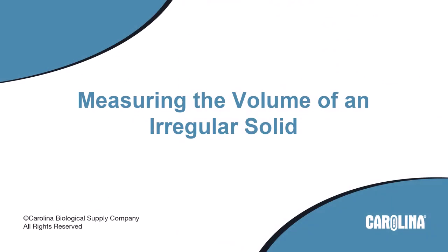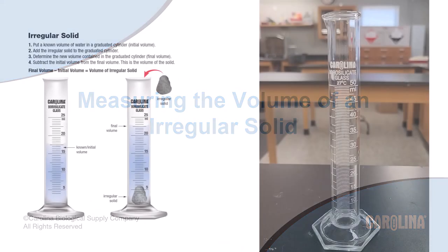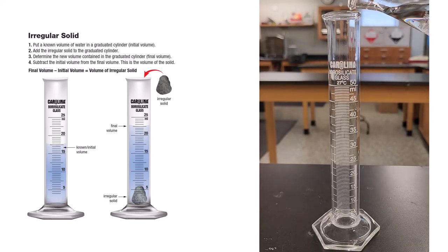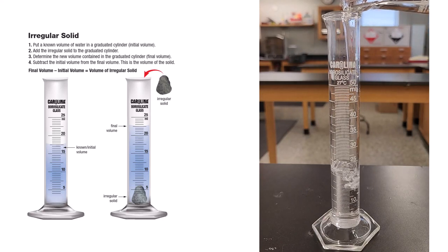Measuring the Volume of an Irregular Solid. To measure the volume of an irregular object, you will need a graduated cylinder. The graduated cylinder will need to be able to contain your object and enough water to cover the object, and still be within the markings on the graduated cylinder. Select a graduated cylinder of appropriate size. Place the graduated cylinder on a flat, level surface. Pour water into the graduated cylinder. Make sure there will be enough water to cover your object, but not to overfill the graduated cylinder when the object is added.